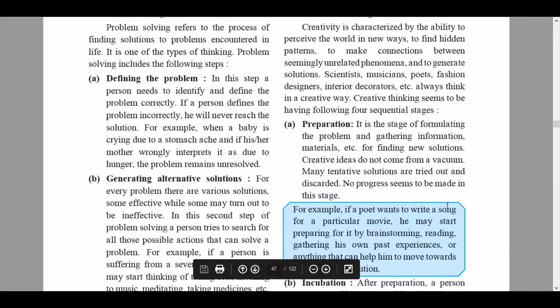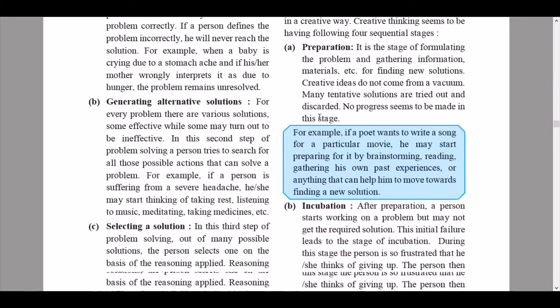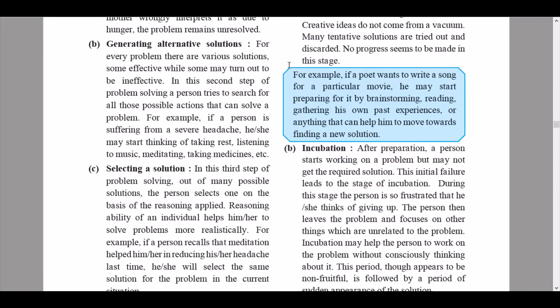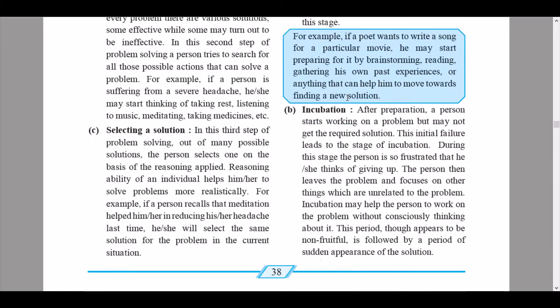The first stage is preparation. It is the stage of formulating the problem and gathering information, materials, etc., for finding new solutions. Creative ideas do not come from a blank vacuum. Many tentative solutions are tried out and discarded, and no progress seems to be made in this stage — it is essentially a hit-and-trial method. For example, if a poet wants to write a song for a movie, he may start by brainstorming, reading, and gathering past experiences that can help him move forward.